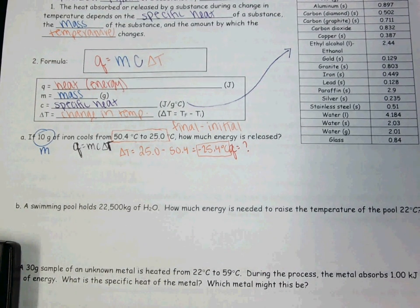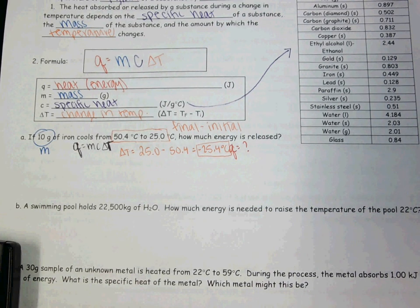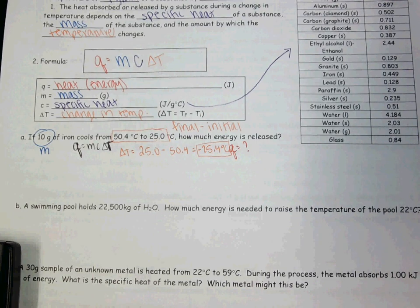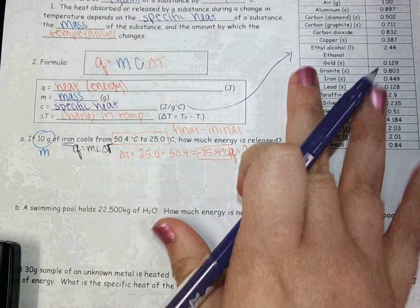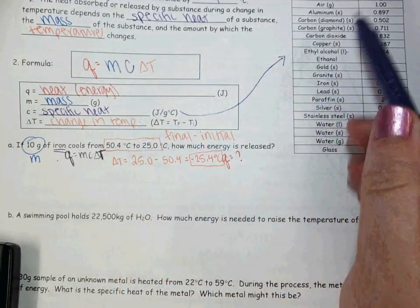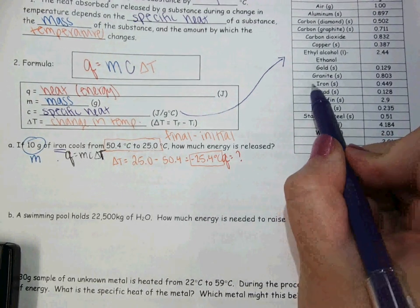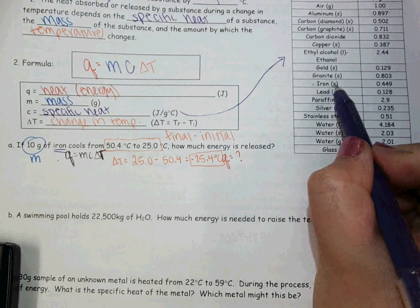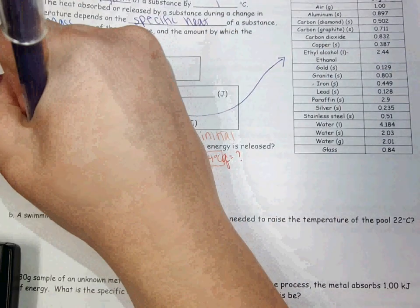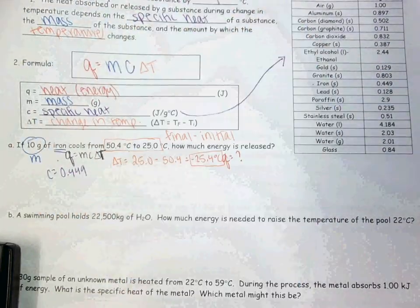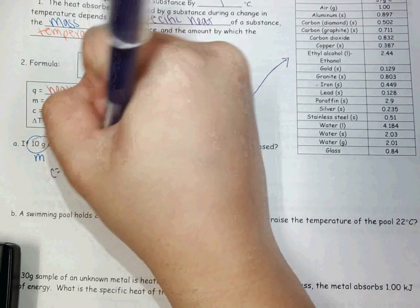What is the only other thing I need to solve this? Specific heat, which is C. Do I have a specific heat value given to me? Not directly in the question, but I could find one easily on the table. It tells me that this is iron. Since my substance is iron, the specific heat of iron is given to me in this table. The little 's' next to iron stands for solid. So solid iron has a specific heat of 0.449.